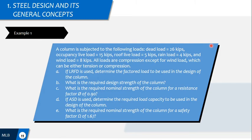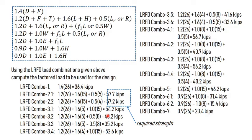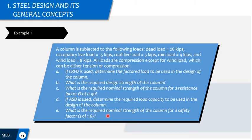So now, for example, a column is subjected to the following loads: dead load, occupancy live load, roof live load, rain load, wind load, and all loads are compression except for wind. Wind can be suction or pressure, so it can either be negative or positive, tension or compression. The question is: if LRFD is used, determine the factored load to be used in the design of the column. This is lesson one evaluation.